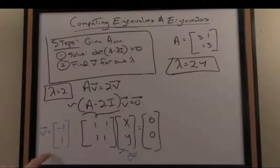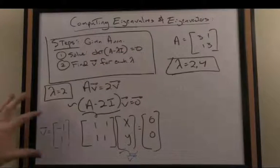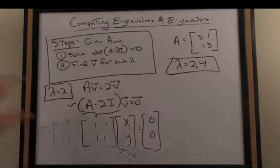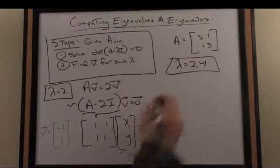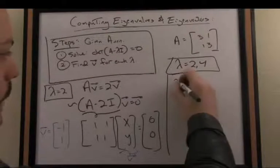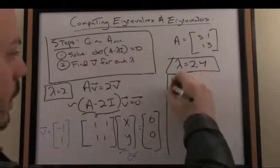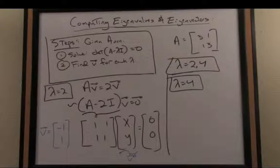And also, it's worth noting, when we did the geometric rendering of the same problem for the eigenvectors of matrix A, this was the vector we had associated with eigenvalue 2. Now in the second case, just to finish this up, we consider when lambda is equal to 4, when our eigenvalue is 4.